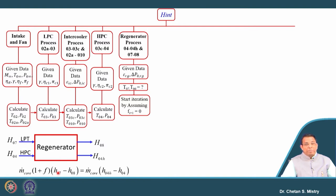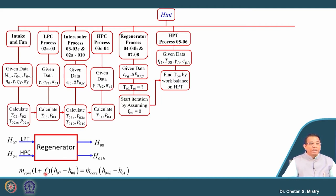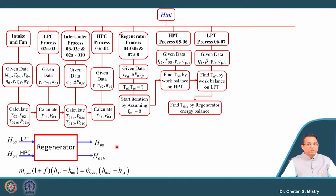We need to follow a systematic method. One approach is to assume the value of fuel-air ratio F. Based on that assumed F, we calculate the temperature at the entry and exit of the HP turbine. The turbine entry temperature T05 is known, so we can calculate T06. Once T06 is known, given efficiency and expansion work, we can calculate T07. Once T07 is known, we can calculate T04H.